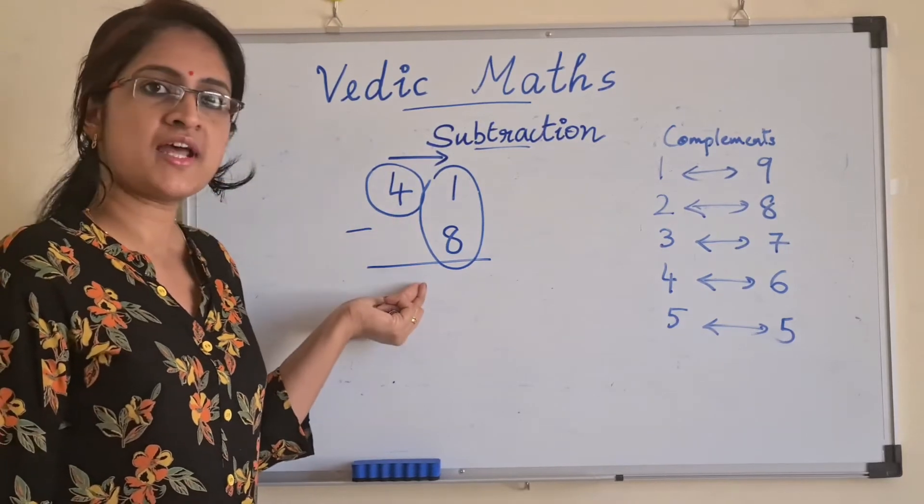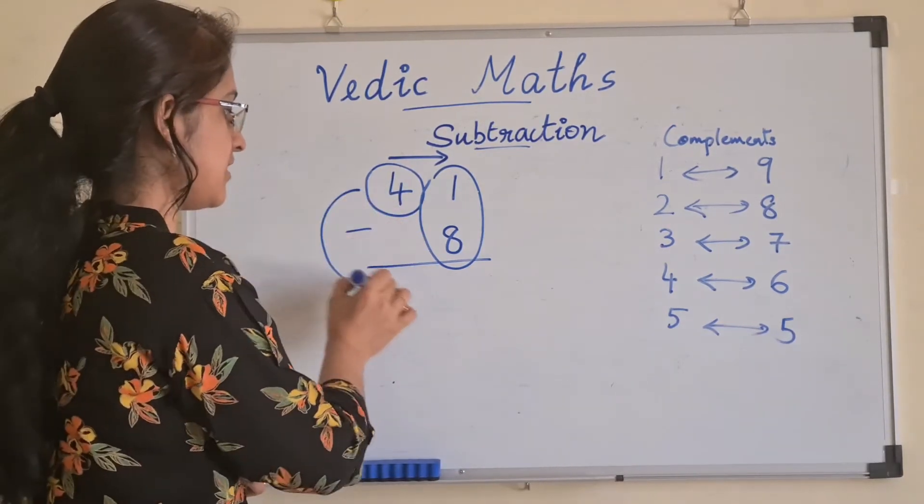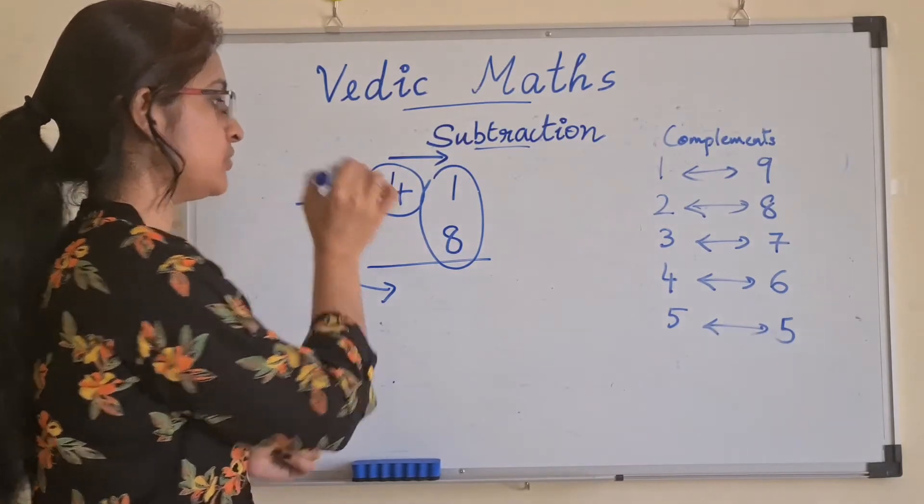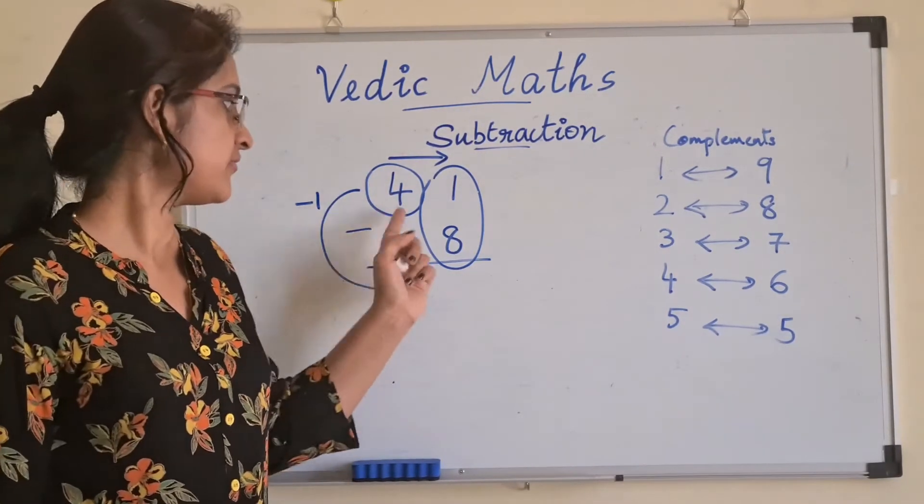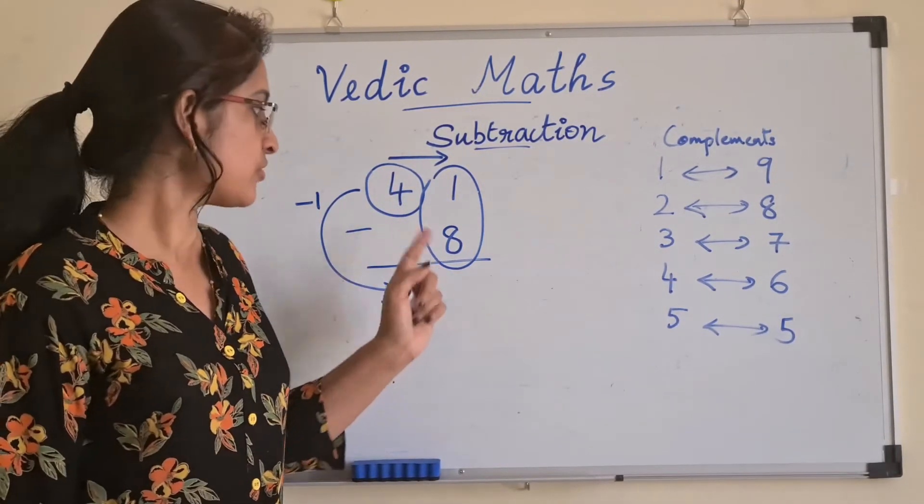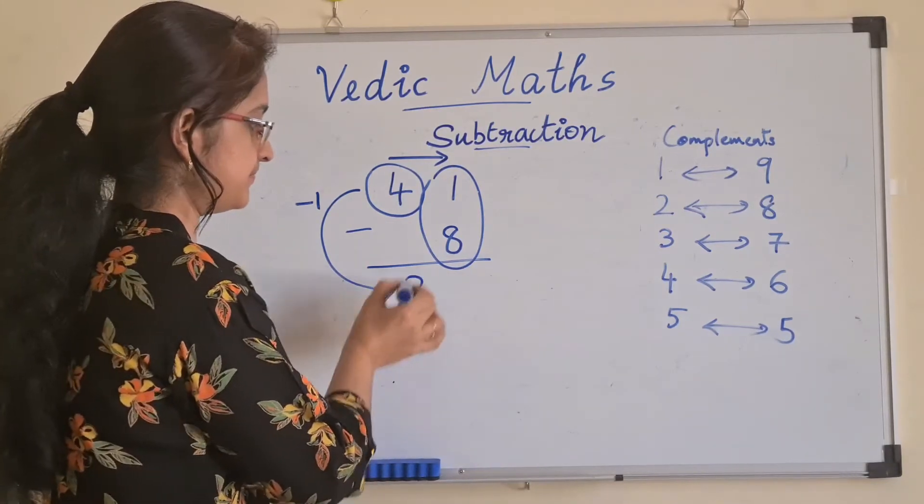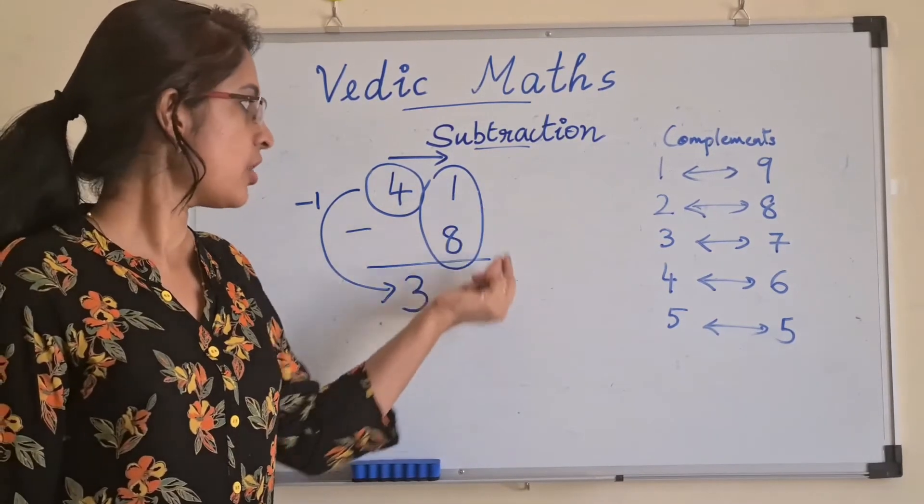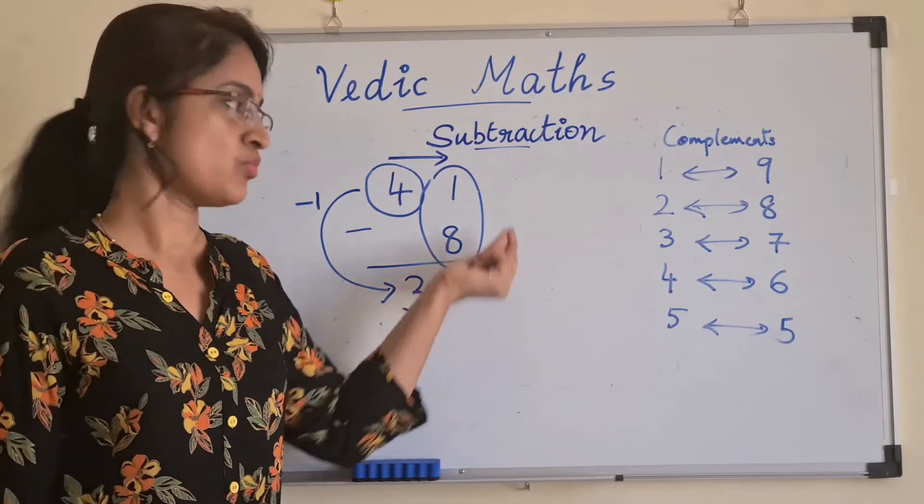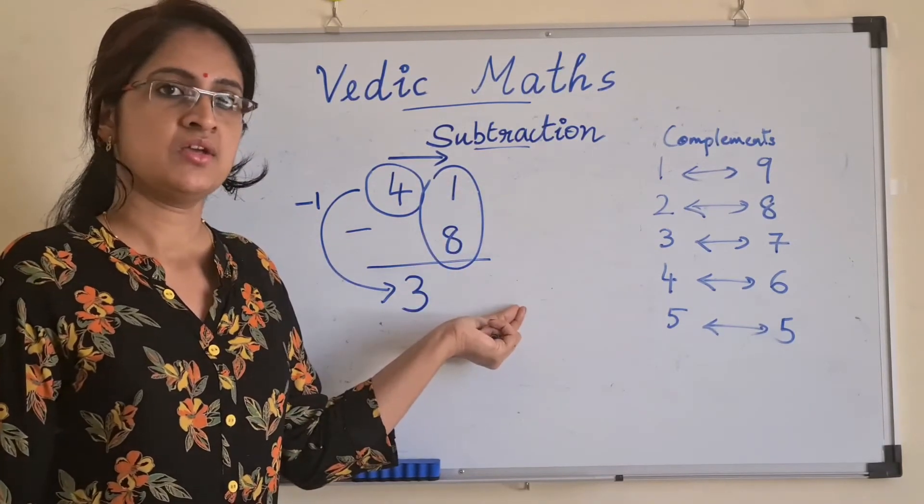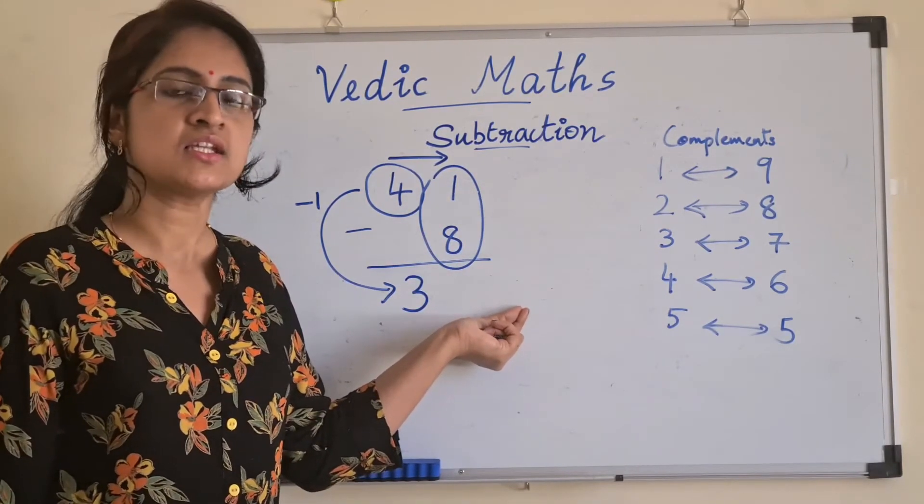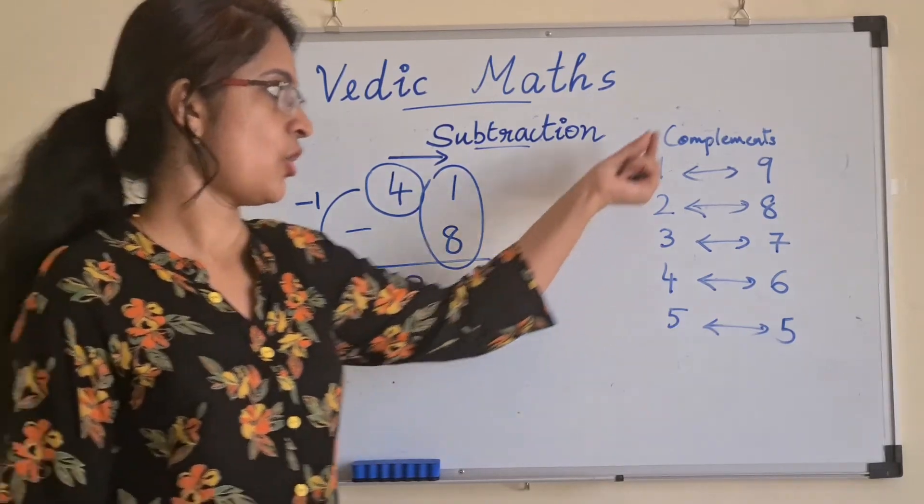Before writing here, you will subtract 1. You will take away 1 from 4. So, 4 becomes 3. Since we cannot do 1 minus 8, as 1 is lesser than 8, we go for the second concept, which is complements.